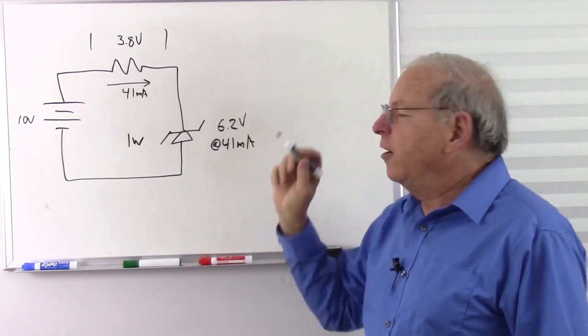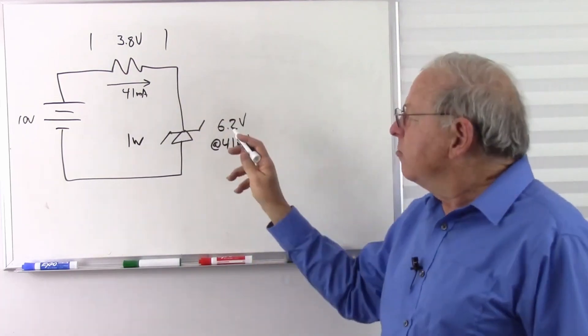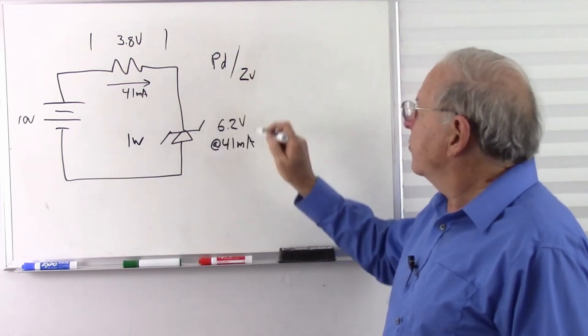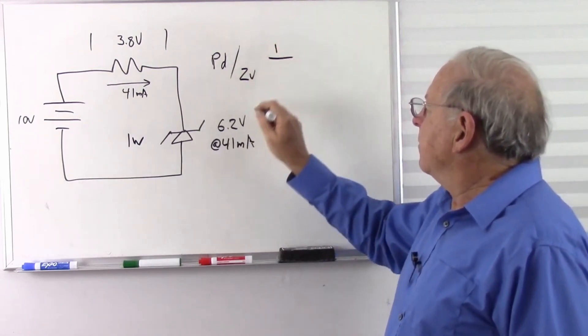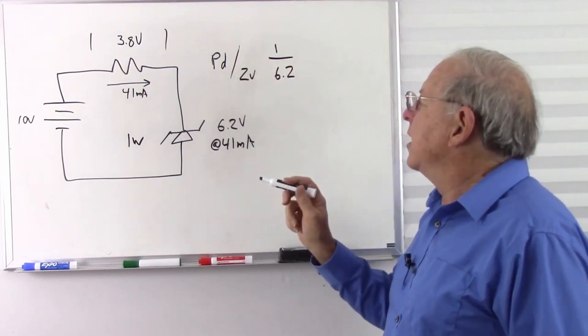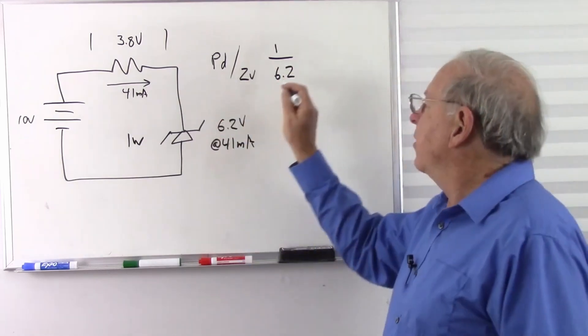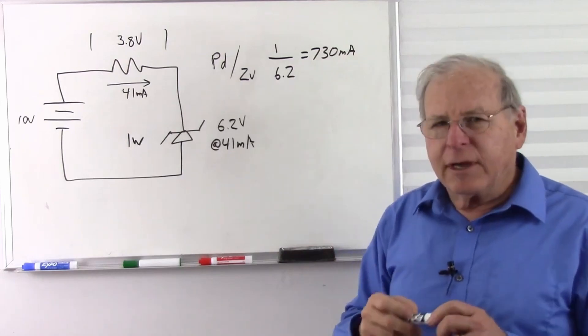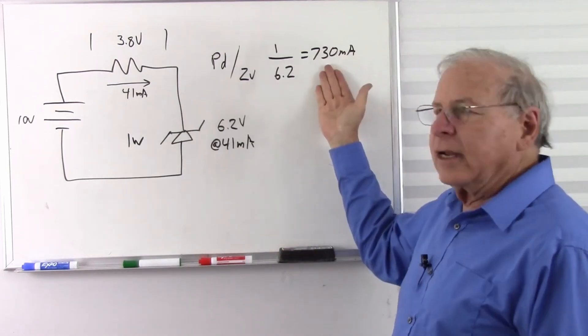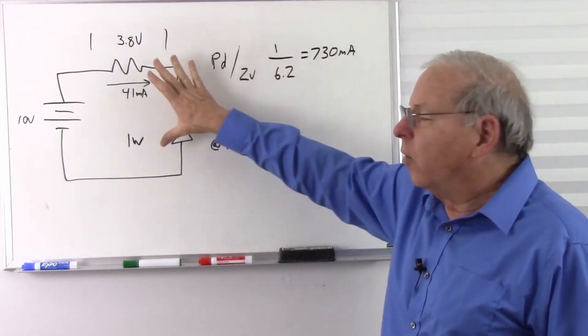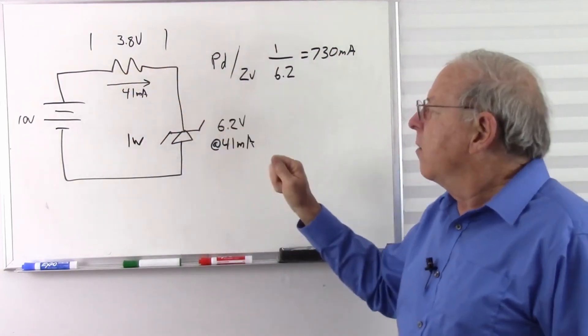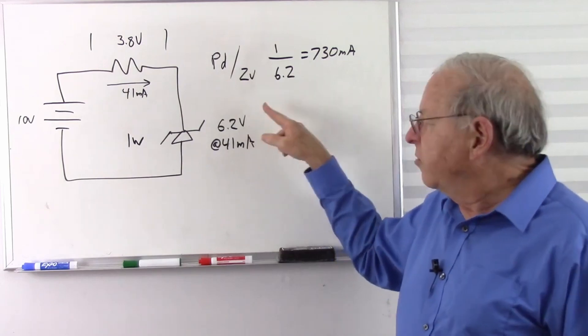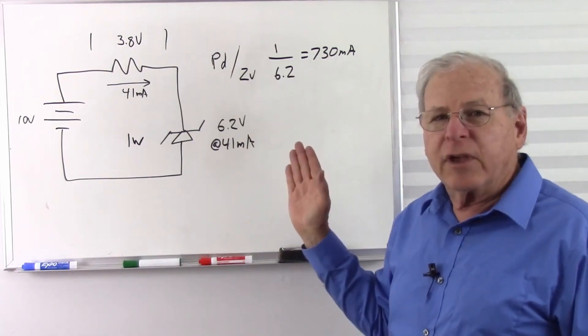So the question is, why don't we design for our maximum current? Well, the maximum current is going to be our power dissipation divided by our zener voltage. In this case, that's going to be 1 divided by 6.2, so that gives us a maximum current of 730 milliamps. That's a lot more than 41 milliamps. The question is, shouldn't we design for the maximum current because that's what we want to not exceed? Well, the reason we don't do that is this tells us that we will get 6.2 volts at 41 milliamps.